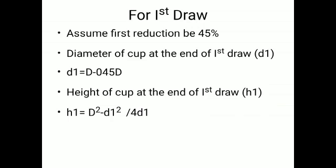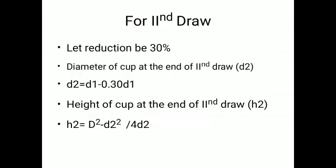For the first draw, assume first reduction is 45%. Therefore, the diameter of the cup at the end of the first draw is d1, calculated as d1 = D − 0.45D. The height of the cup at the end of the first draw is h1 = (D² − d1²) / (4 × d1). For the second draw, reduction is 30%, so d2 = d1 − 0.30 × d1. The height at the end of the second draw is h2 = (D² − d2²) / (4 × d2).